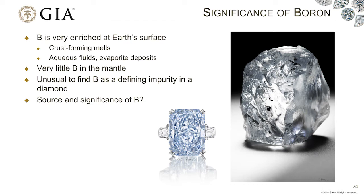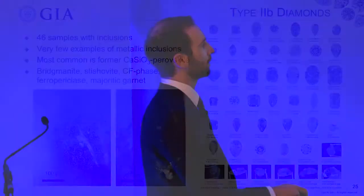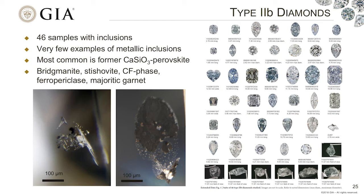Looking at 46 type 2b diamonds with inclusions, I initially noticed very few metallic inclusions. Instead they have a different mixture dominated by a calcium silicate phase — calcium silicate perovskite breaking down into other calcium silicate phases that can actually be measured. There are also some other inclusions including Bridgmanite, Stishovite, a CF-type phase (calcium ferrite type phase), ferropericlase, and majoritic garnet.